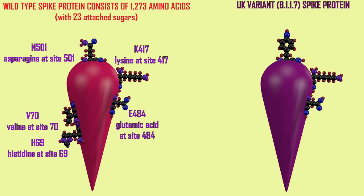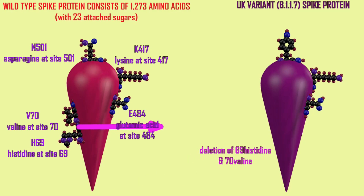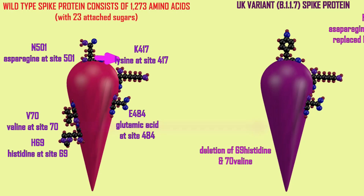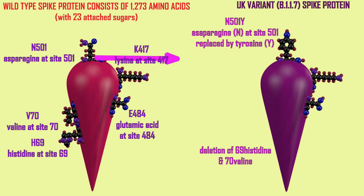A variant strain of coronavirus was isolated in the UK, and it is informally known as the UK variant, although there are more official ways of labeling variants. It had a number of changes from the original coronavirus — more than a dozen — of which several affected the spike protein, such as a deletion of the histidine and valine amino acids at sites 69 and 70. They simply aren't there. And the change of the asparagine amino acid at site 501 to tyrosine — that would be written N501Y, where N is the abbreviation for asparagine and Y is the abbreviation for tyrosine.